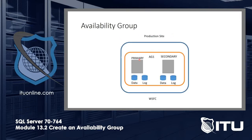An availability group looks like this: you have two servers, each with their own database and log. That is a distinct difference from the old failover cluster — they're not sharing databases. Instead, they're synchronizing, which is where the mirroring part comes in. However, they do operate based on Windows Server failover cluster technology, just without shared data. So you have two servers kind of in a failover cluster but with their own separate data.